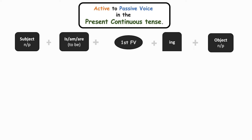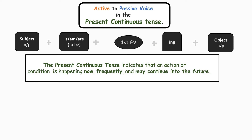As I've already told you, subjects are nouns or pronouns and are the doer of the action. Then comes is/am/are — the to-be form of the verb, which are auxiliary verbs. Then the first form plus -ing, then comes the object. Objects are also nouns or pronouns in which the actions are done upon. We use the present continuous tense when an action or condition is happening now, frequently, and may continue into the future.